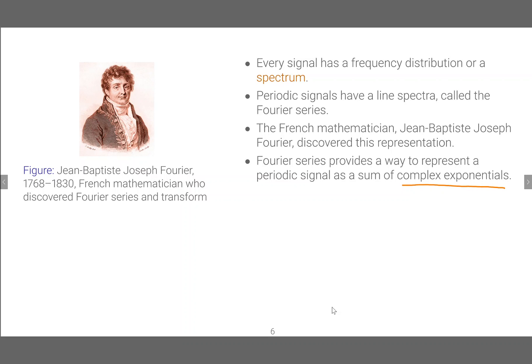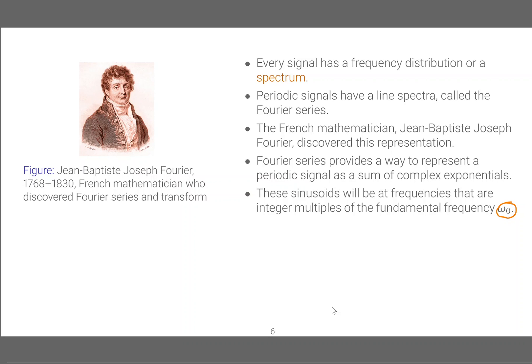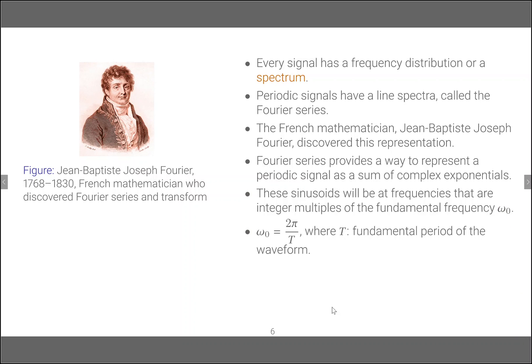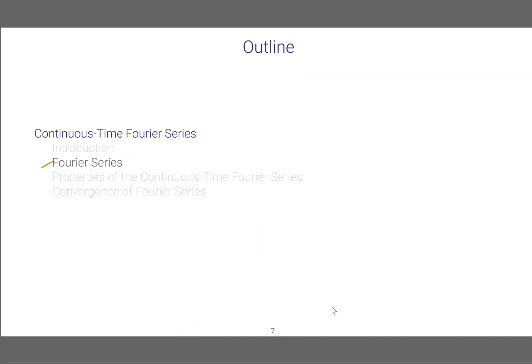In this lesson we will study the complex exponential Fourier series, but there are other versions like the trigonometric Fourier series — I will show you the relationship later. These sinusoids will be at frequencies that are integer multiples of the fundamental frequency omega-naught. We have to remember that omega-naught equals 2π over T, where T is the fundamental period of the waveform.